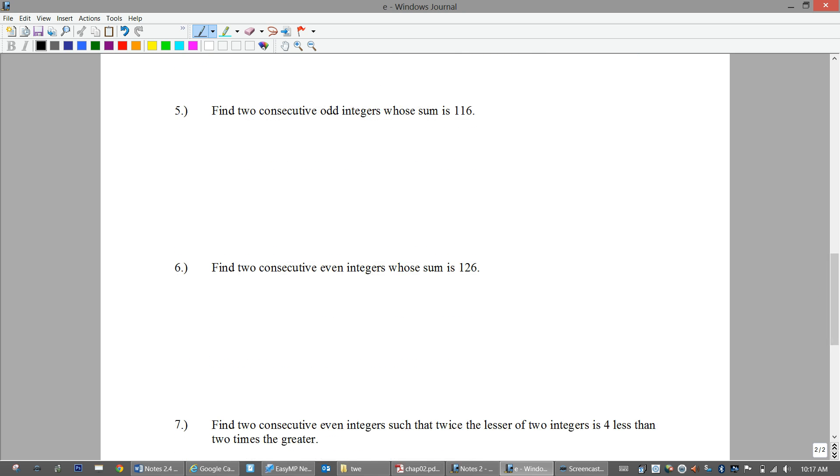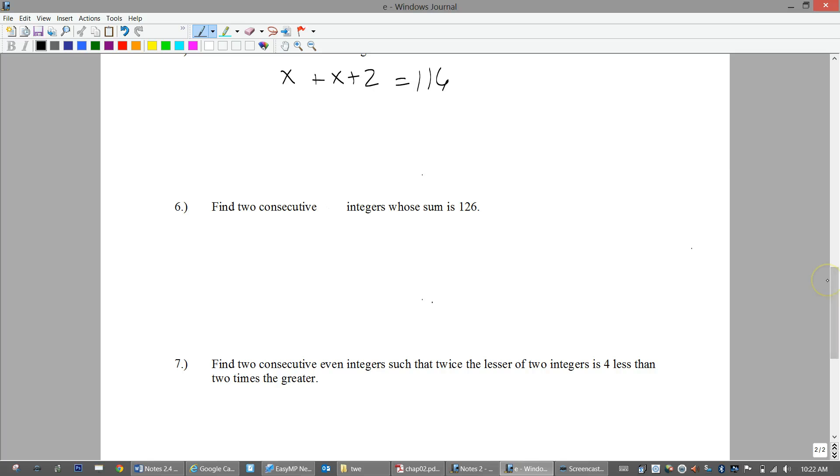Back side, set up five and six please. Make the word even go away. Find two consecutive odd integers whose sum is 116. You should write x and then x plus two equals 116 as your setup. That's all. I only said that like five times, just saying.